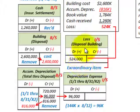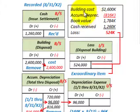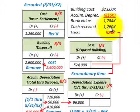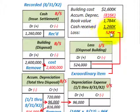We also have to calculate a loss on disposal of the building. To calculate the loss: building cost $2,600,000 less accumulated depreciation of $816,000 (up to the time of the fire) gives a book value of $1,784,000. The cash received from insurance was $1,260,000. Since book value is greater than cash received, we have a loss — the difference is $524,000.